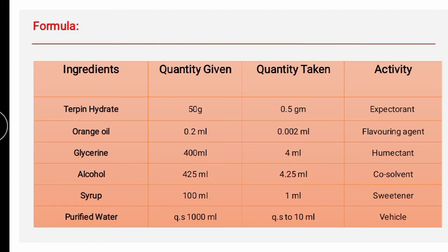In the preparation of linctus, other ingredients can also be added. Syrup also acts as a stabilizer. Different coloring agents like compound tartrazine solution or coal tar dyes can be added. Different preservatives can also be added — for example, in the preparation of chlorine phosphate linctus, boric acid is used as a preservative. Other preservative examples include benzoic acid, chloroform, and tolu syrup.